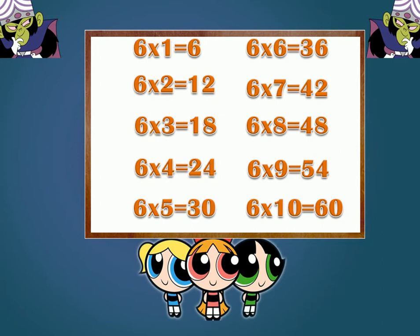Six one is six. Six two is twelve. Six three is eighteen. Six four is twenty-four. Six five is thirty. Six six is thirty-six. Six seven is forty-two. Six eight is forty-eight. Six nine is fifty-four. Six ten is sixty.